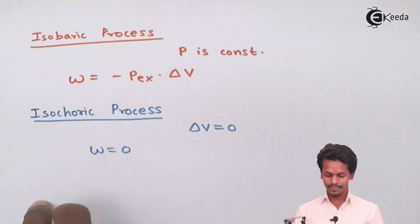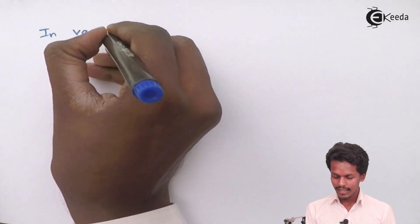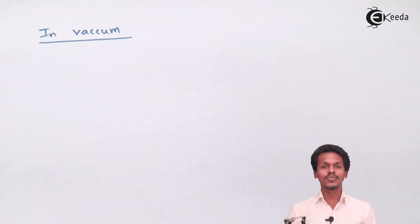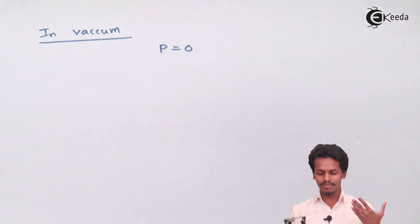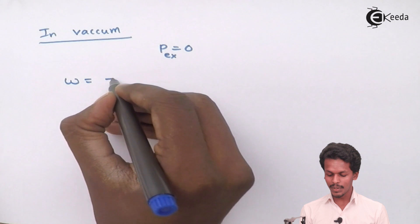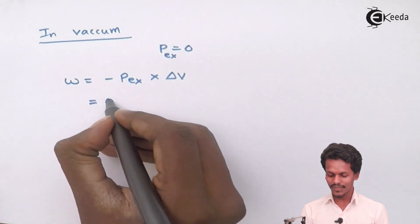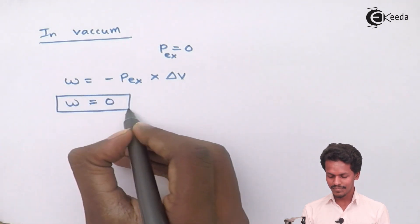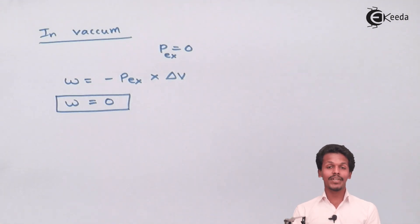Third, in vacuum: there is no pressure, so the external pressure P_ex is zero. Therefore, W = minus P_ex × ΔV = 0. Even though the gas expands into vacuum and the piston moves, no work is done because the external pressure is zero. These were the three conditions: isobaric process, isochoric process, and expansion in vacuum.